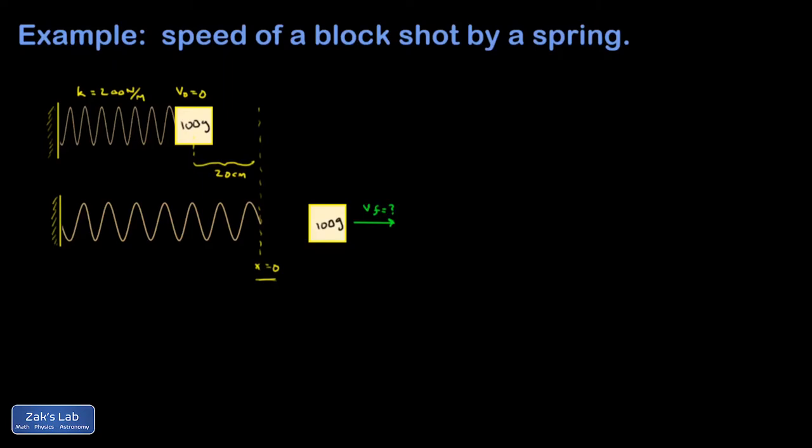We're going to use energy conservation to do this. We are now using a potential energy function as a bookkeeping device for how much work the spring is doing. Once we have that formalism, we don't have to directly talk about the work done by a spring anymore. I don't have any friction acting, so my total mechanical energy is constant. E initial equals E final.